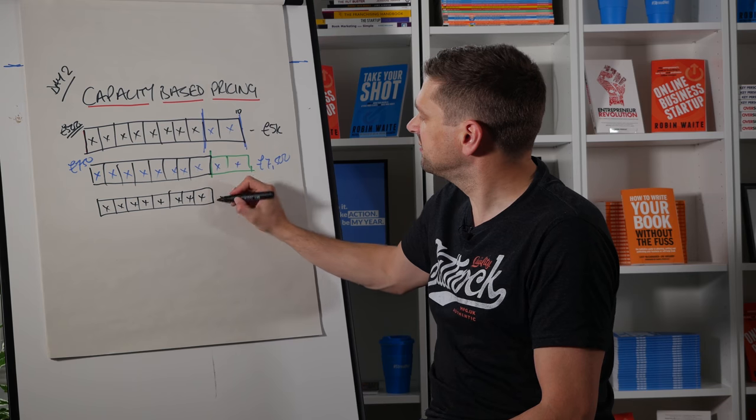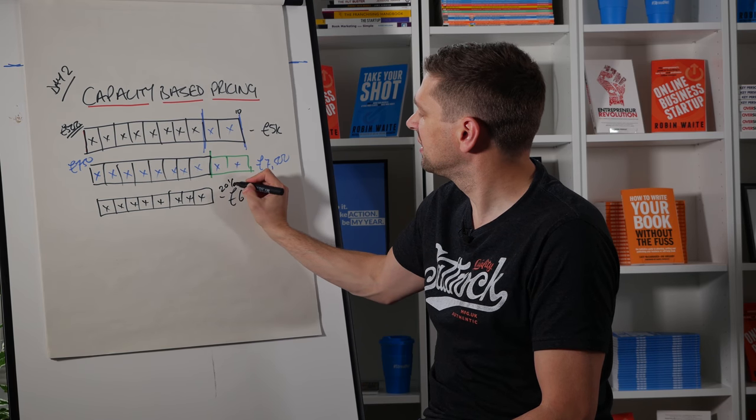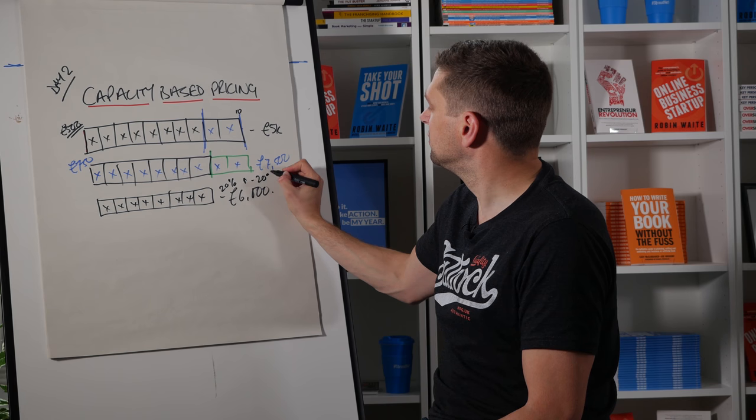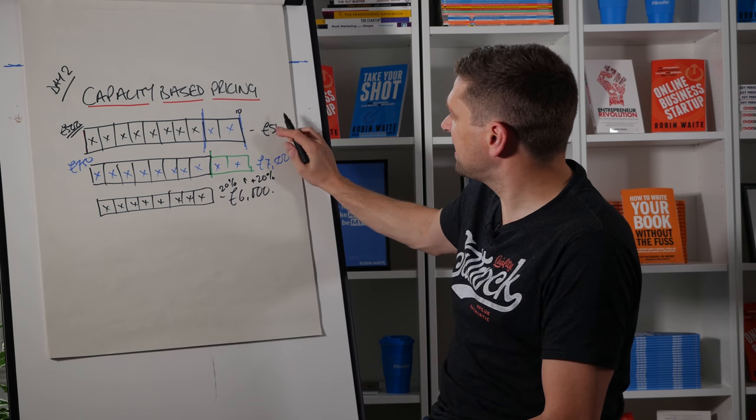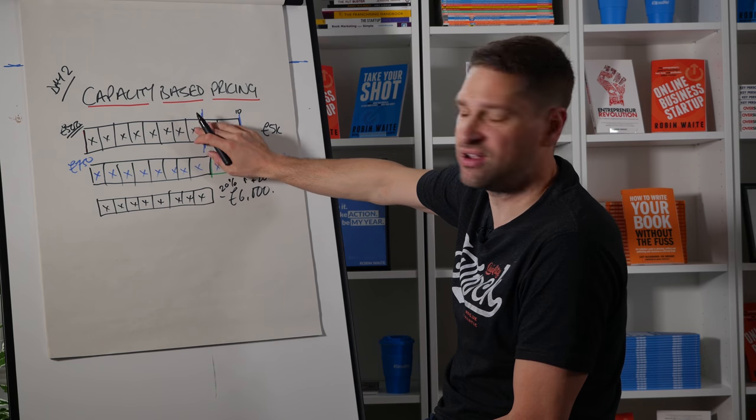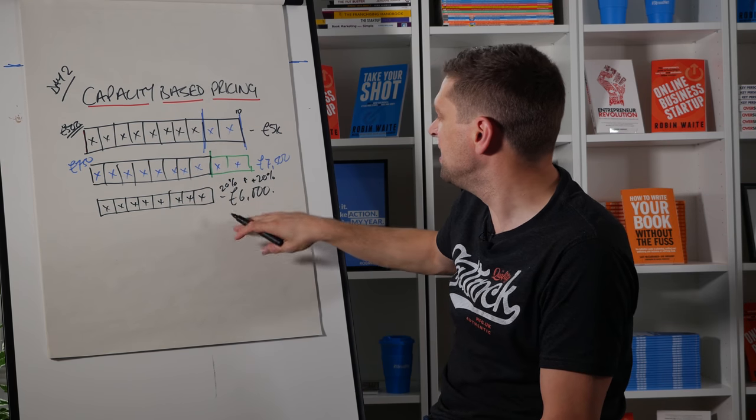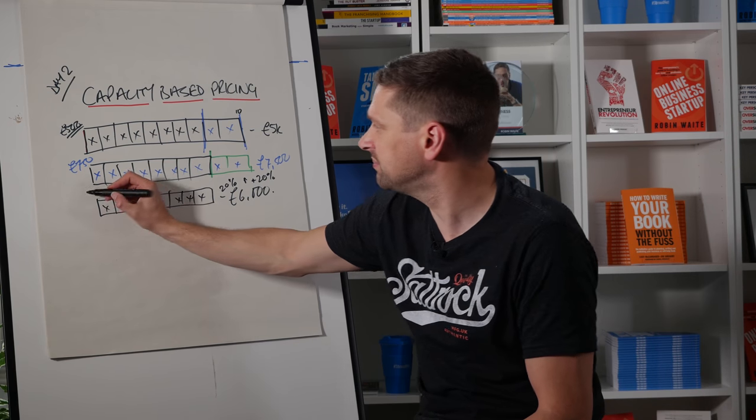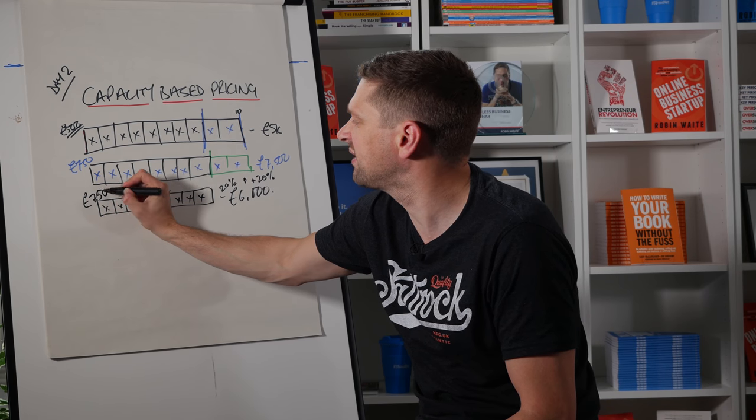So we're working 20% less and we're making 20% more. So we're making 20% more money than we were when we had 10 clients for £500, but we're working 20% less because now we've only got eight clients on board. Hopefully, this is starting to make some sense.